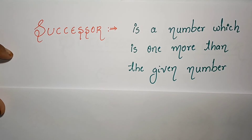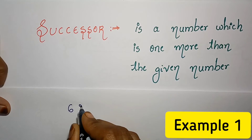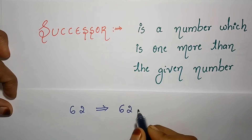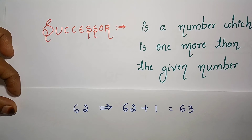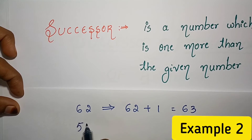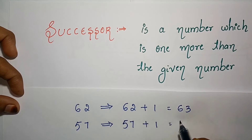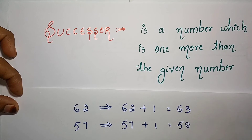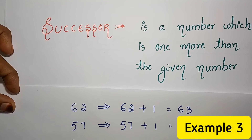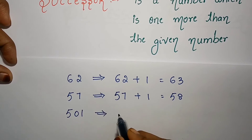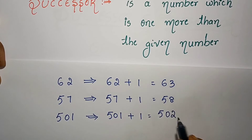Suppose you have to find successor of 62, so successor of 62 will be 62 plus 1. For example, 501: successor will be 501 plus 1 which is equals to 502. To find the successor of any number, just add 1.